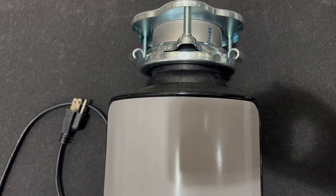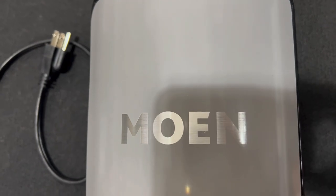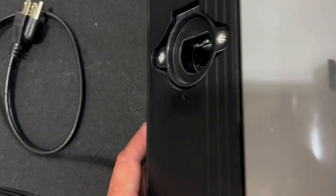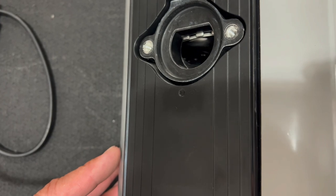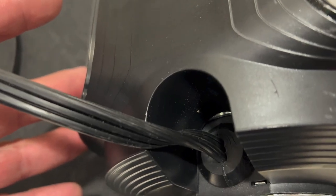This is the half horsepower continuous feed and you can continuously feed food and there's your drain connection outlet. It's the inch and a half, kind of the standard size. Also automatically comes with a cord as well.